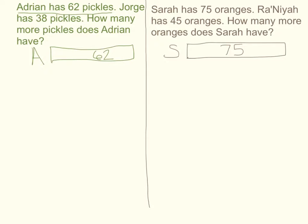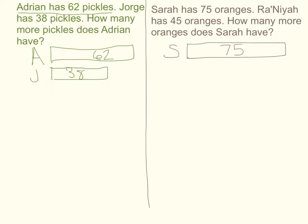Now back to my problem. Looking at my next sentence: Jorge has 38 pickles. Jorge already has his pickles, so I'm going to draw this now. I'll need a J for Jorge. I can see that 38 is a smaller number than 62, so when I draw my square for Jorge, I'm going to make the square smaller. Jorge's square is going to start right in the same line as Adrian's square, but it won't go as far — it's only 38 pickles.